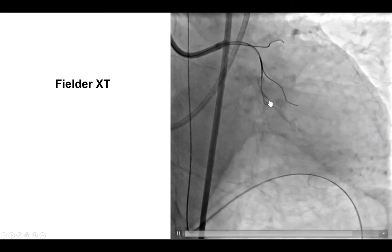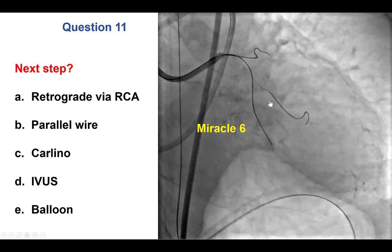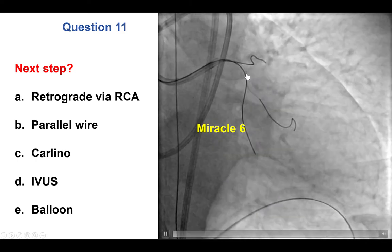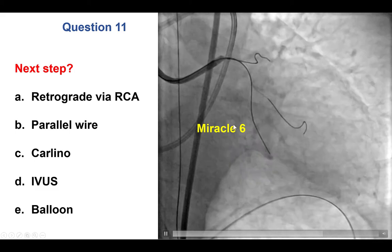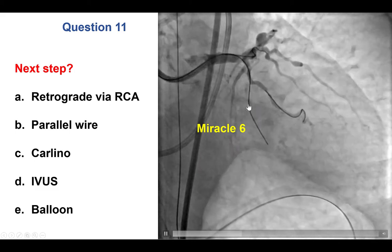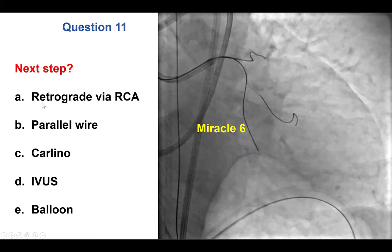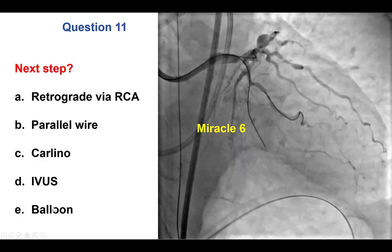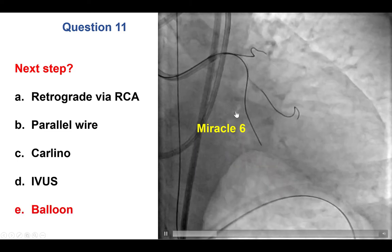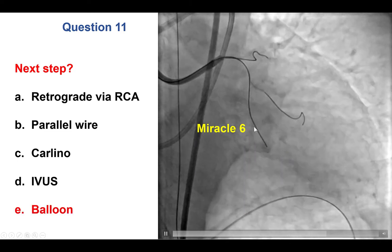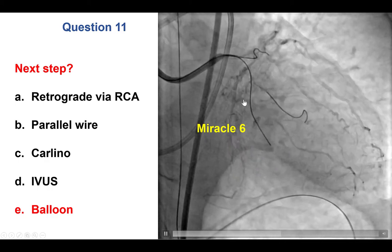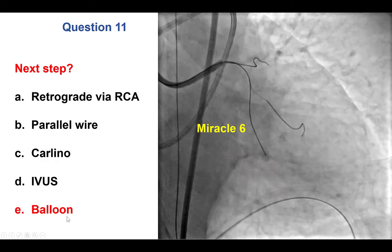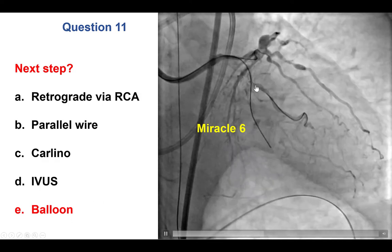A knuckled Filter XT guide wire was used, then a Miracle-6 to deliver the stingray balloon. Delivery was challenging with some guide wire movement. What happened next was a perforation — a wire perforation with the Miracle-6 showing extravasation. Therefore, the first step in every perforation is to inflate a balloon proximally to minimize blood exit into the pericardium.